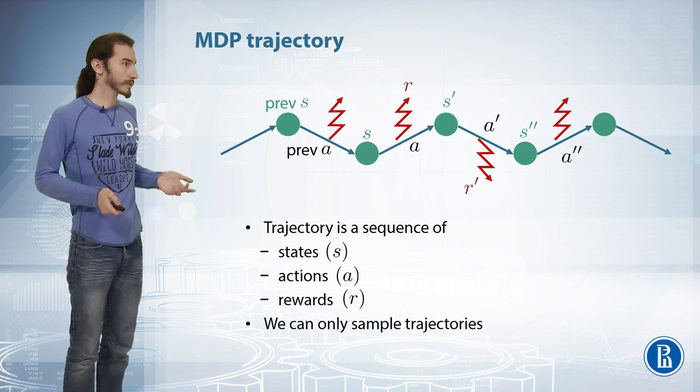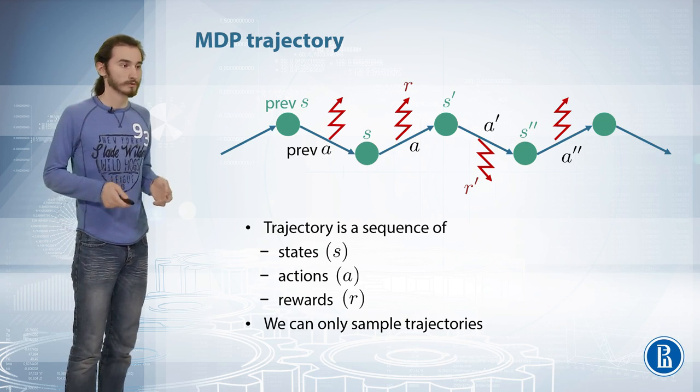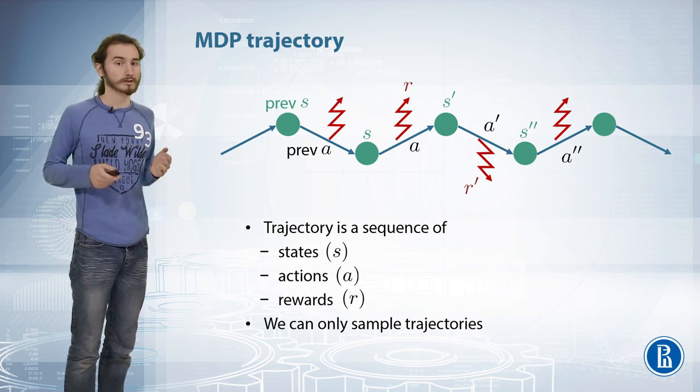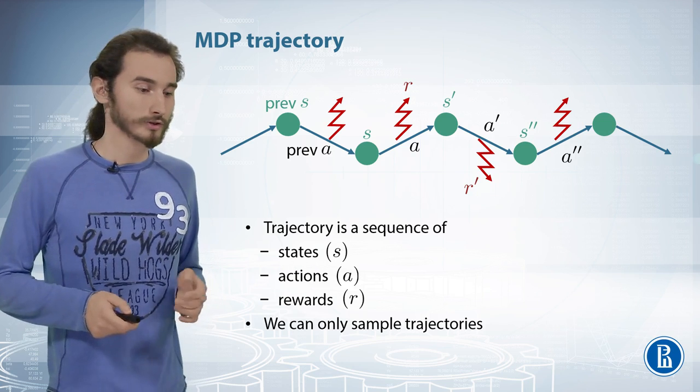So this trajectory is basically a set of states, actions, and rewards coming in a sequence. So there's first state, first action, first reward, second state, second action, second reward, and so on. Of course, you can sample a lot of those trajectories, and for many algorithms, you need plenty of them.